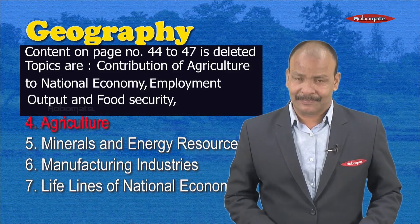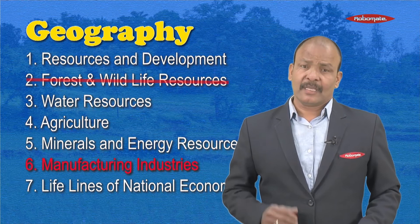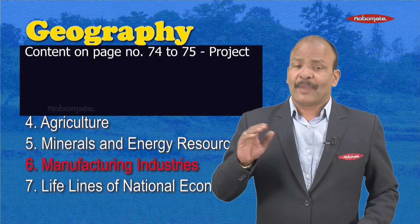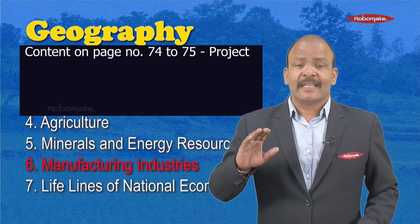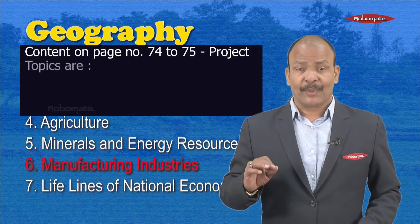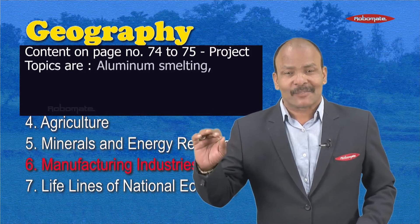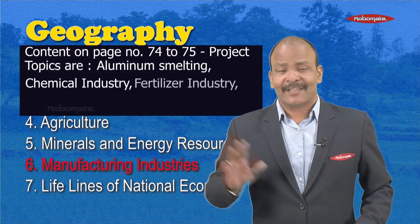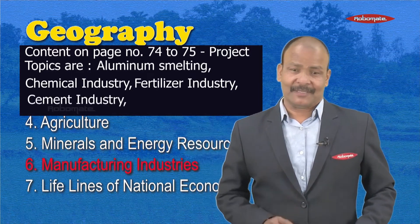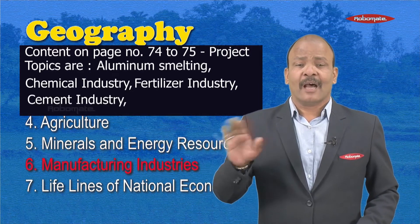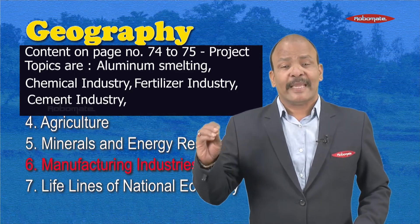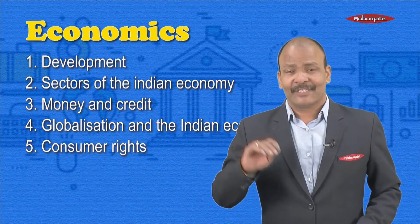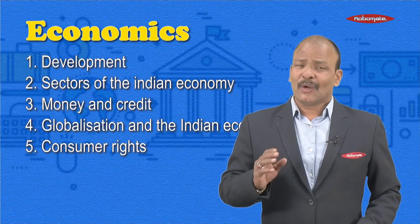The deleted topics in Agriculture are: Contribution of Agriculture to National Economy, Employment and Output, and Food Security. In chapter number six, the content from page number 74 up to 75 is only for project work, meaning there will be no questions from the exam. The topics are Aluminium Smelting, Chemical Industry, Fertilizer Industry, and Cement Industry. When it comes to Economics, you have altogether five chapters and you need to study all five chapters.